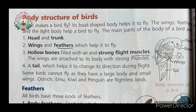So can you tell me children what are the main parts of the body of a bird? These are head and trunk, wings and feathers, hollow bones filled with air, strong flight muscles, and a tail. These are the main parts of the body of a bird.